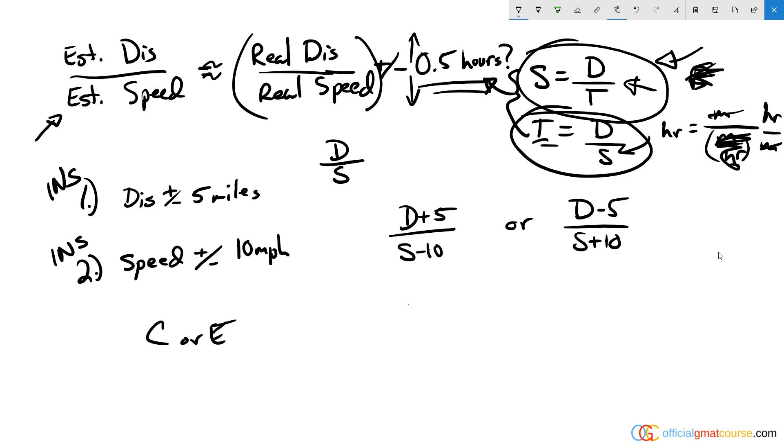Now in order to make the largest difference, if I know that the estimates were within five miles and within 10 miles per hour, I think we can obviously assume that they were like 0.01 miles off and 0.01 miles per hour off.